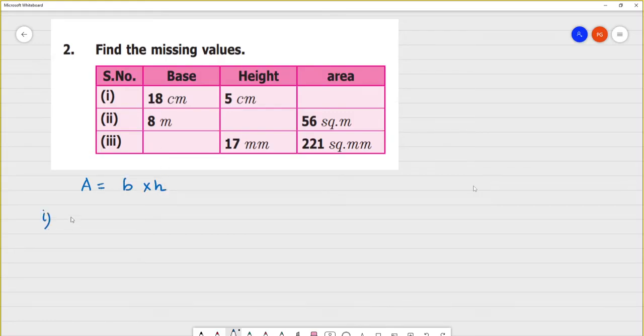First one. First one, what do you do? Base is 18, 18 multiplied by 5. That is equal to 90 square centimeter. So what is the answer here? 90 square centimeter.